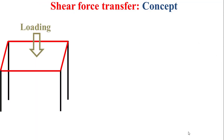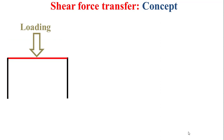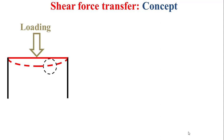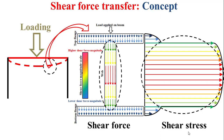Now let's focus on the concept of shear force transfer. In the same way as for the bending moment, if we examine the cross-section of the bent beam, we will find the shear force which is parallel to the direction of the applied load — parallel to the cross-section — and the higher shear force magnitudes are located in the web. Same thing for the higher shear stress magnitudes. Based on this observation, we can deduce that the shear force is transferred from a child member to a parent member principally through the web.